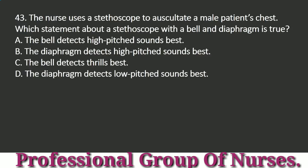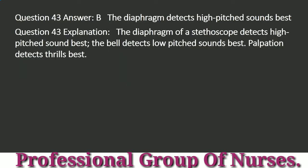Question 43: The nurse uses a stethoscope to auscultate a male patient's chest. Which statement about a stethoscope with a bell and diaphragm is true? a. The bell detects high-pitched sounds best. b. The diaphragm detects high-pitched sounds best. c. The bell detects thrills best. d. The diaphragm detects low-pitched sounds best. Answer: b. The diaphragm detects high-pitched sounds best. Explanation: The diaphragm of a stethoscope detects high-pitched sounds best. The bell detects low-pitched sounds best. Palpation detects thrills best.